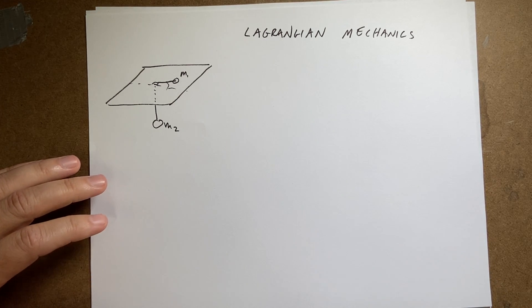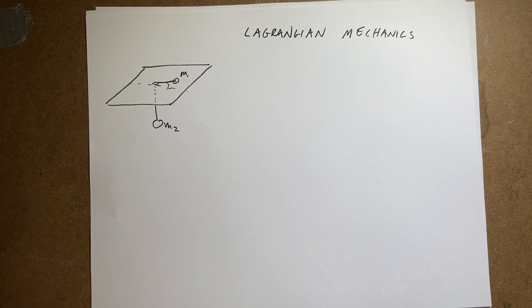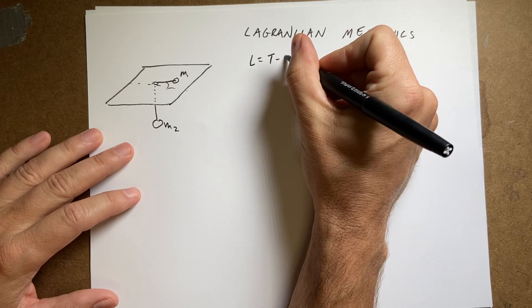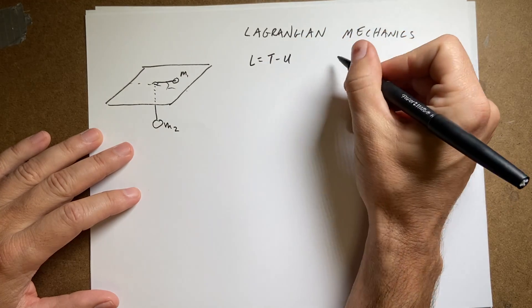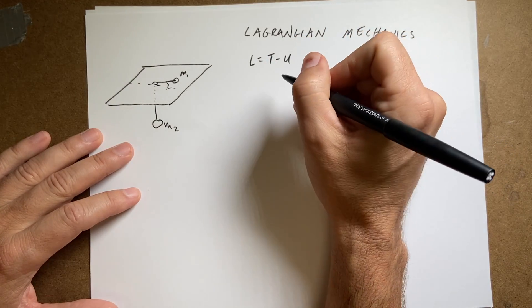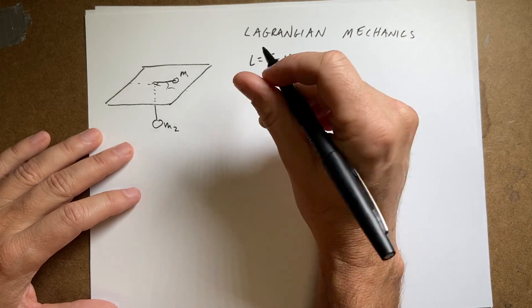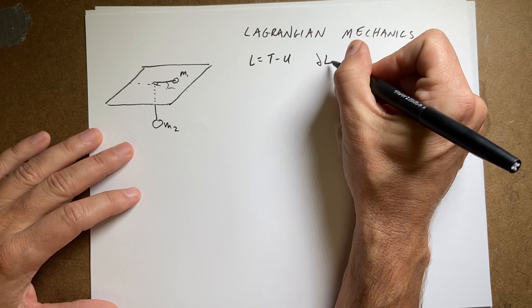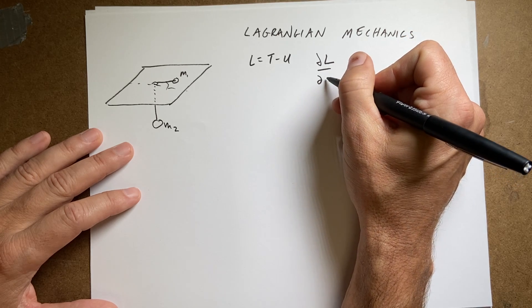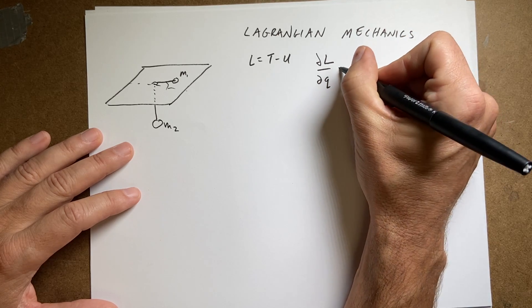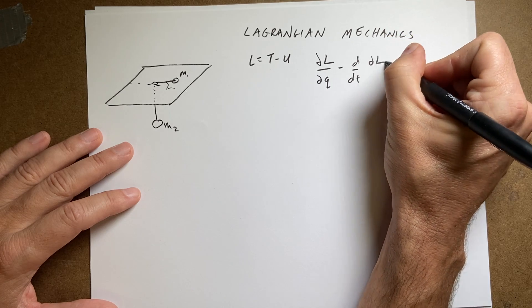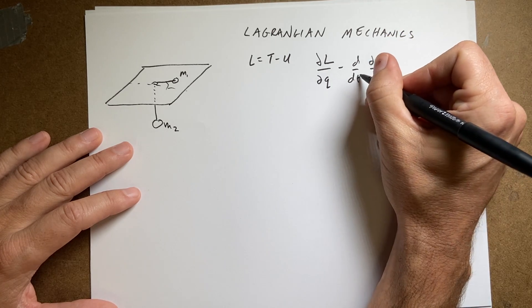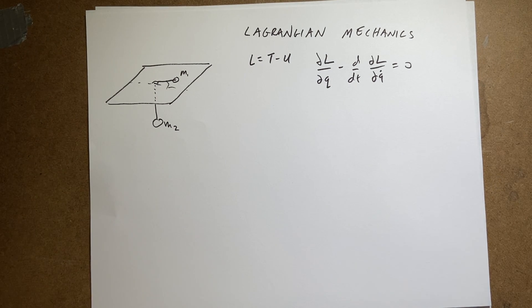The first thing is, when we think about the Lagrangian — remember, Lagrangian is T minus U — and the solution is the case where the Lagrangian is a stationary state integrated over time. That means we can use the Euler-Lagrange equation: the partial of L with respect to q, minus the derivative of the partial of L with respect to q-dot, with respect to t, is equal to zero. And we can have more than one variable.